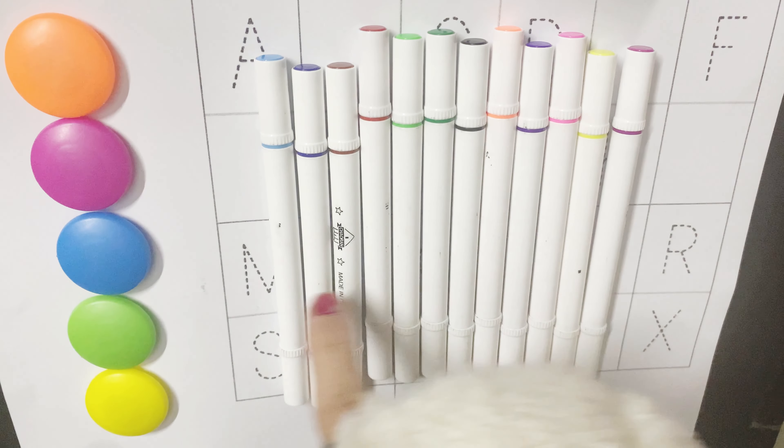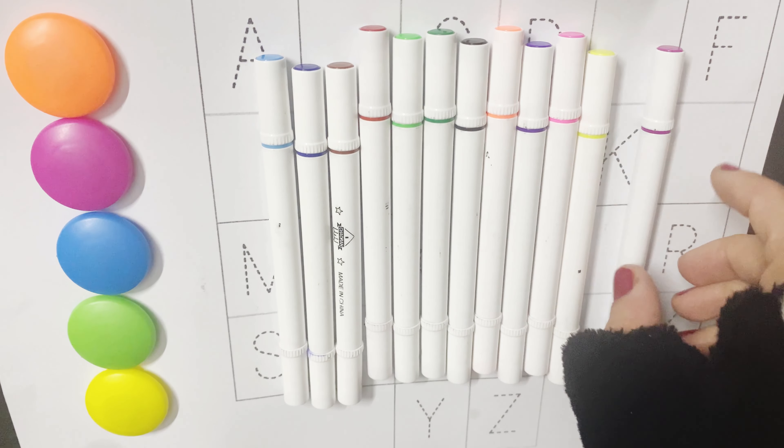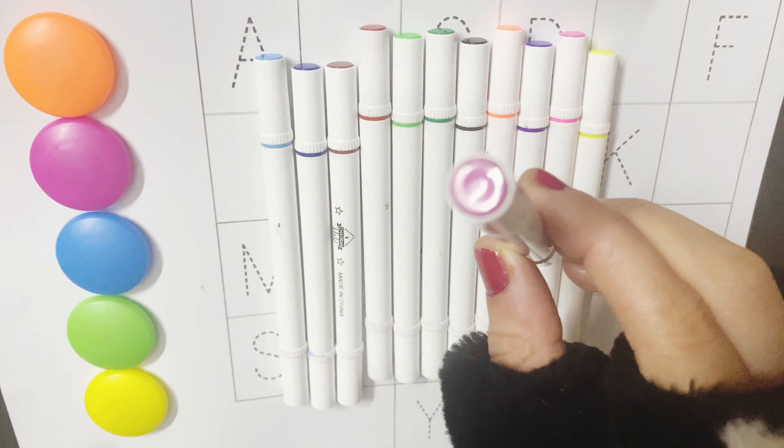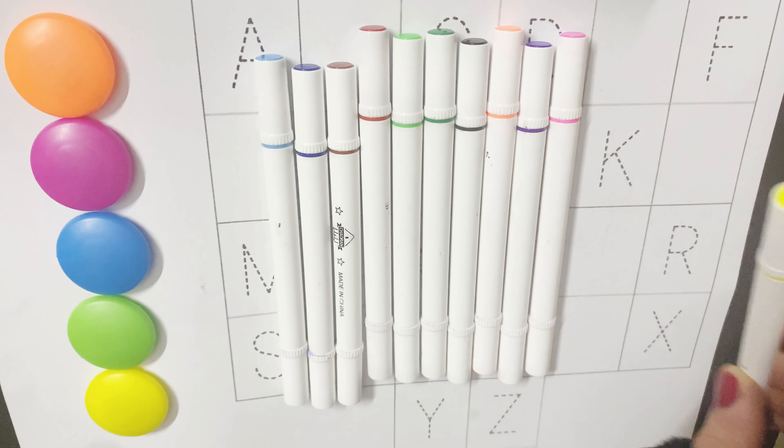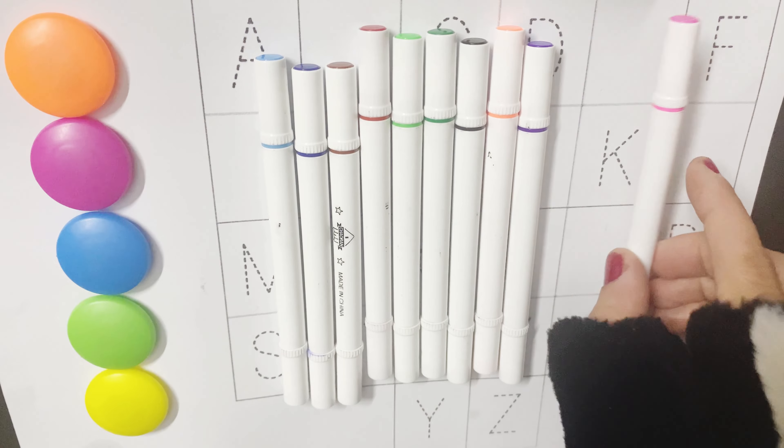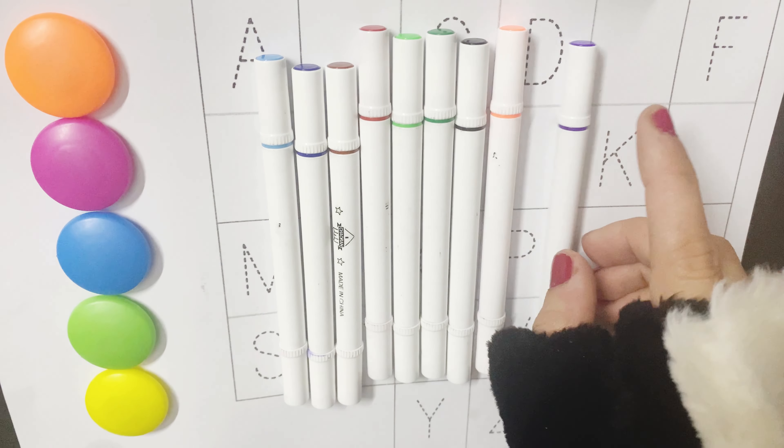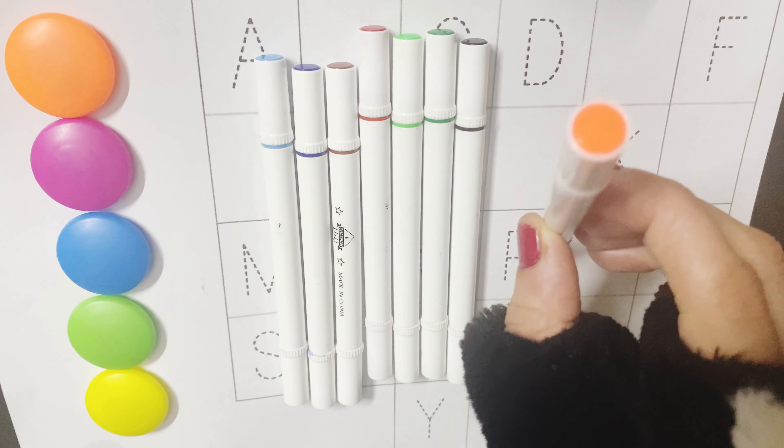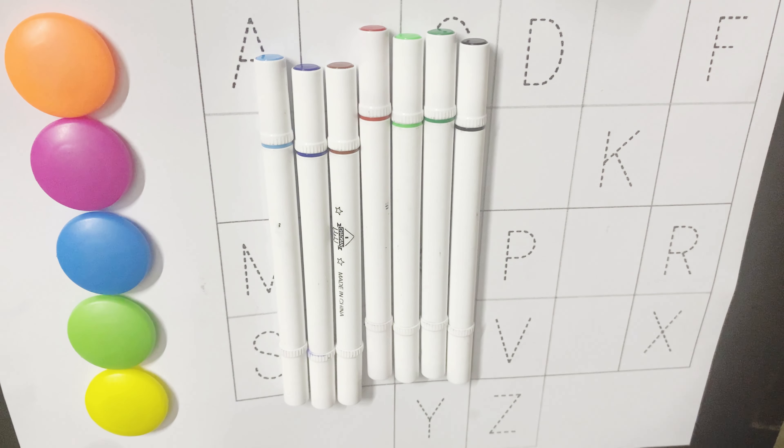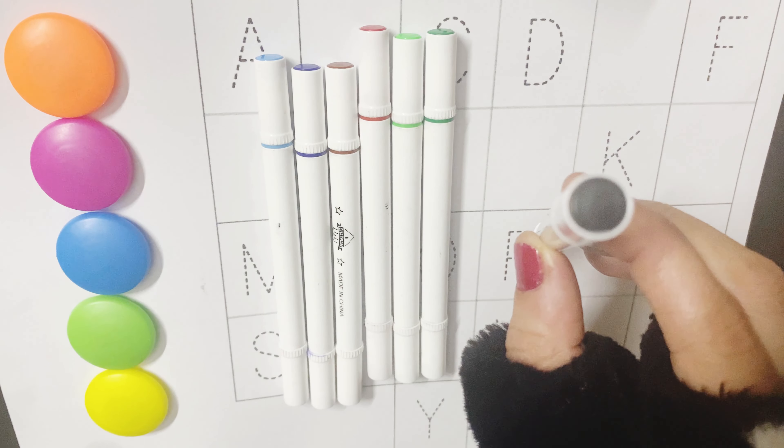Hello kids, let's learn the colors first. Magenta color, yellow color, light pink color, purple color, orange color, black color.